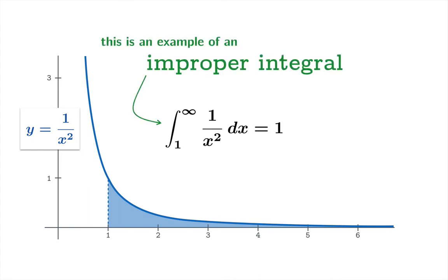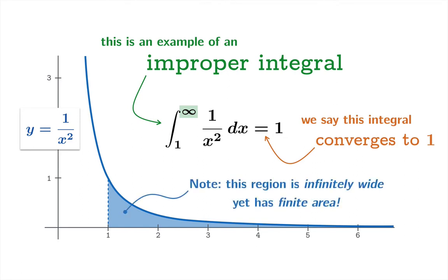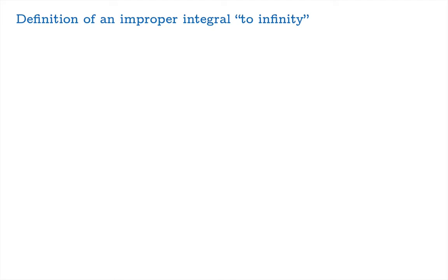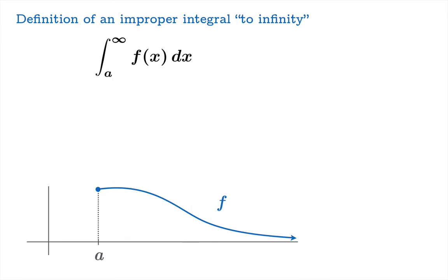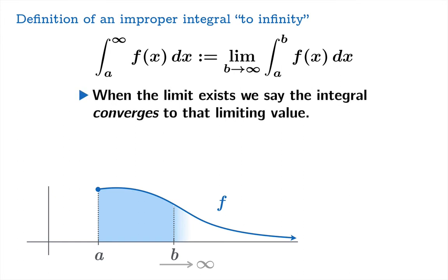This is an example of what we call an improper integral — we're trying to integrate off to infinity — and we make sense of it as a limiting value of integrals over finite intervals. In this case the integral converges to the value 1. Our interpretation: this region, although infinitely wide, has finite area equal to 1. Officially: given a function whose domain starts at a and runs to infinity, we integrate over a finite interval from a to b and look at the limiting value as b goes to infinity. When the limit exists, we say the integral converges; when it fails to exist, we say it diverges.